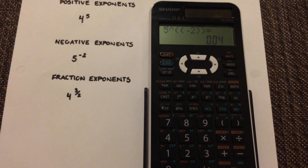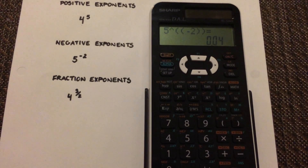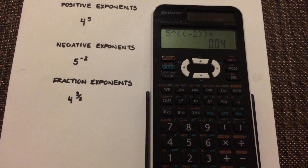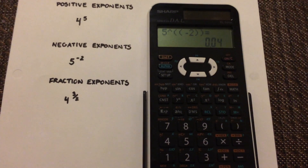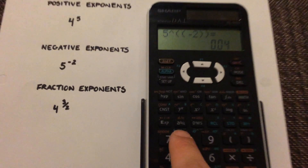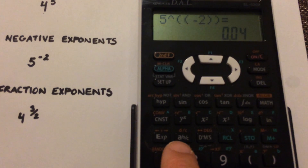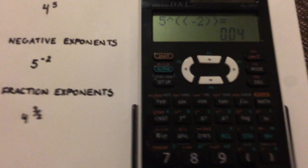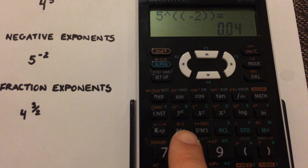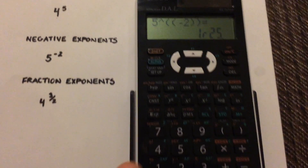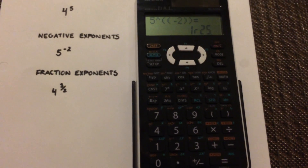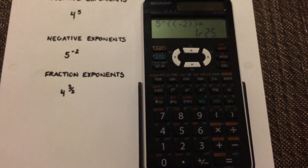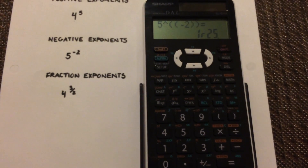Now you can convert that into a fraction if you please — you can leave it as a decimal as well. To convert to a fraction, you're going to select this fraction button, the ABC. Select that and you'll see it automatically converts it. So 5 to the negative 2 is 1 over 25.